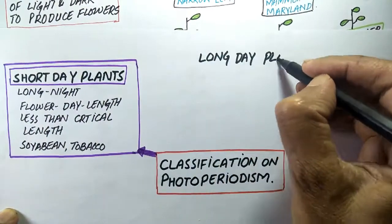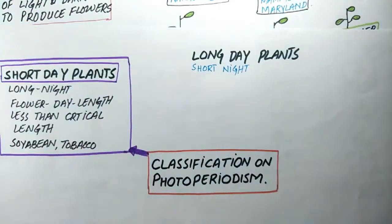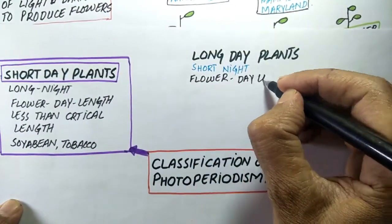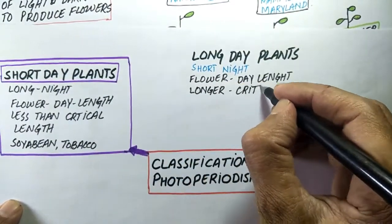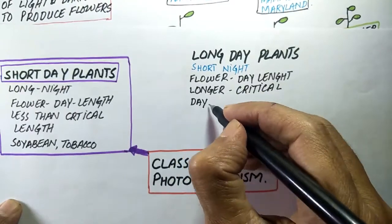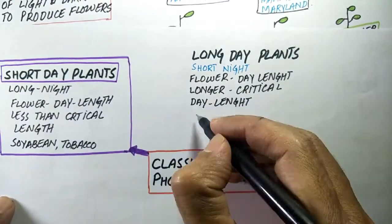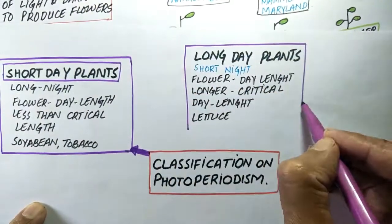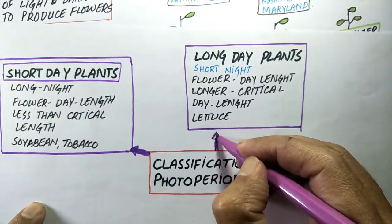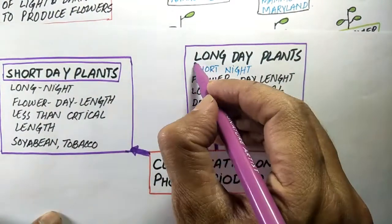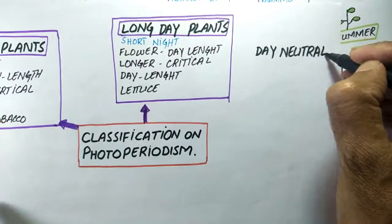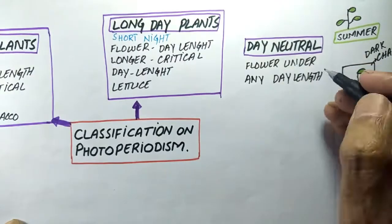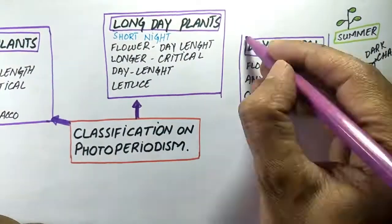Long Day Plants are plants which flower when the day length is longer than the critical day length. Longer day length means they require more light, and this critical day length differs from species to species. Examples of long day plants are spinach, sugar beet, and lettuce. Day Neutral Plants flower under any day length, such as tomato, cucumber, and maize.